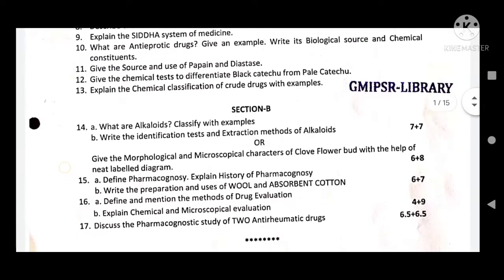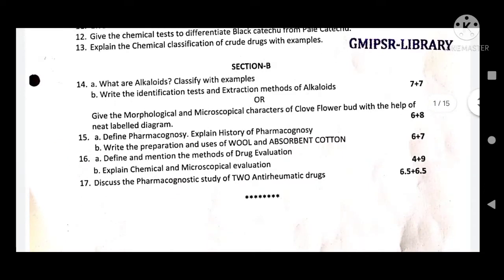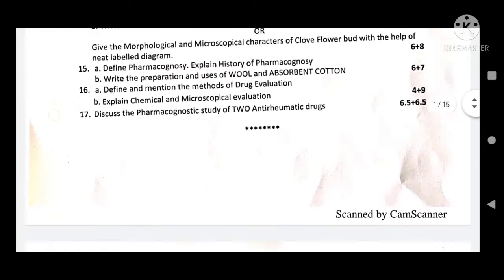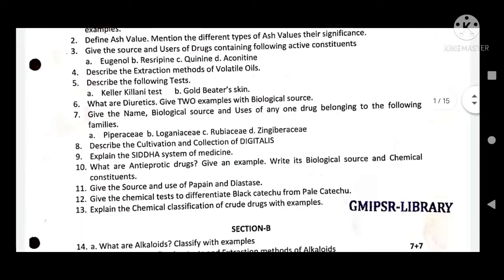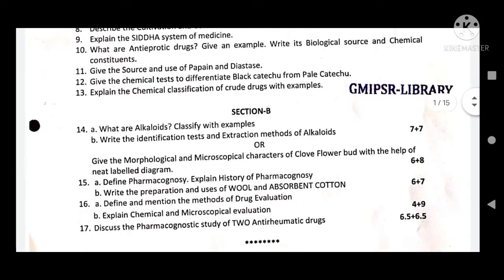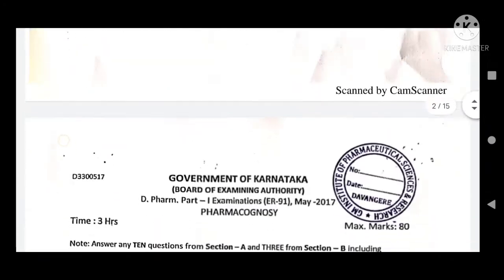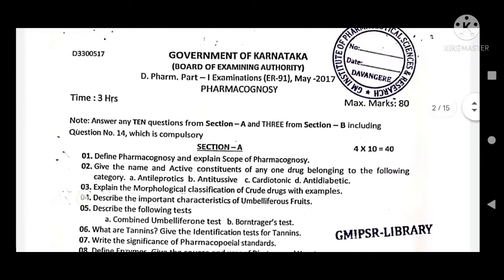Then Section B: there is a 7 plus 7 — 14 marks question, one 13 marks question, one 14 marks, then one 15 marks question. The last question is 6.5 plus 6.5 meaning 15 marks. So it is 4 marks in Section A, then directly 14 and 13 marks questions.